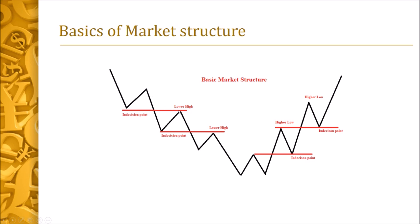A downtrend shows lower highs and lower lows — that is the maximum definition of a downtrend. In an uptrend, we will have higher lows and higher highs. The basics of market structure state that whenever an indecision point is broken, we tend to anticipate a retest of that indecision to continue with the trade.